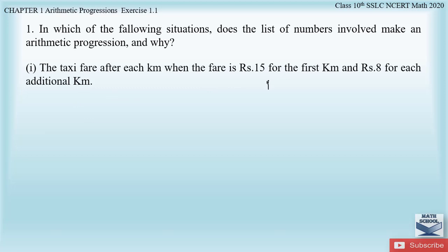If we are traveling from point A to point B, the taxi fare for the first kilometer will be 15. For the next subsequent kilometers it will be 8. For the second kilometer it will be 8, for the third kilometer an additional 8 rupees will be added, and for the fourth kilometer an additional 8 rupees will be added. Only for the first kilometer it is 15; after that the subsequent kilometers it will be 8.